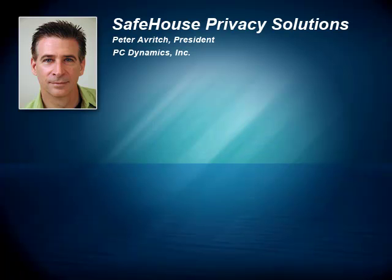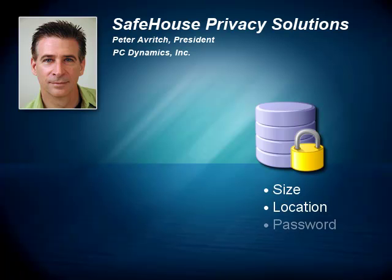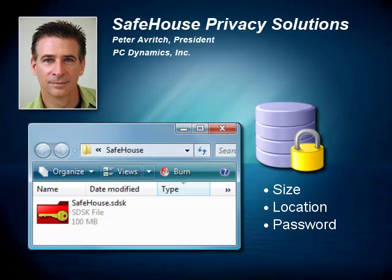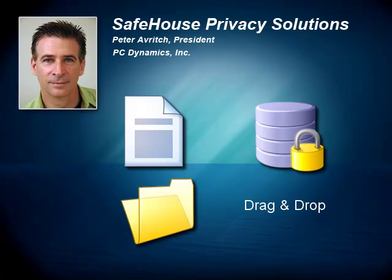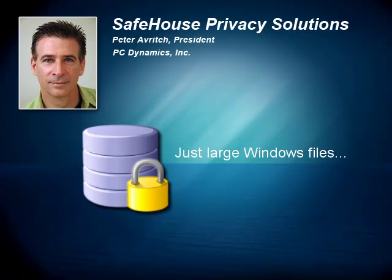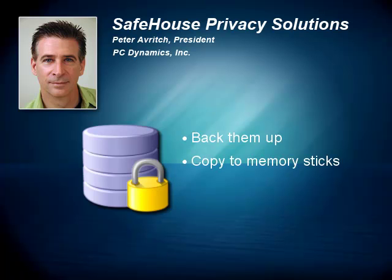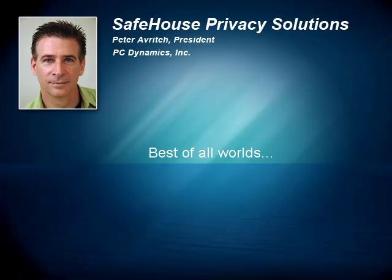You start by creating a data vault to hold your files — you pick the size, location, and secret password, and you can create as many of these vaults as you like. They're just large container files, better known as volumes. However, when you open them up with Safehouse using your password, they magically appear as new temporary disk drives in Windows. You can then drag and drop your confidential files into these private drives or access the temporary disk drive letters from within your favorite Windows applications. And because these volumes are simply large Windows files which masquerade as private storage vaults, you can easily back them up, copy them to memory sticks, and send them as secure file attachments. It's really like having the best of all worlds.